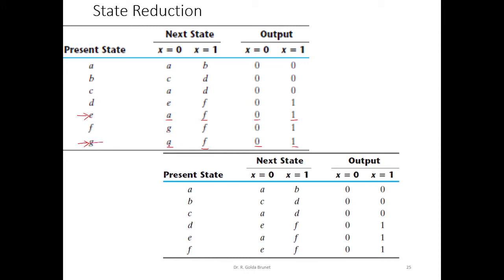So we can remove state G and replace G with E wherever G is occurring. There are no other G's remaining. So we rewrite this table — all other rows are exactly the same except that F now, instead of transitioning to G, transitions to E when the input is 0. Now we will repeat this procedure and find out which two rows are exactly the same.